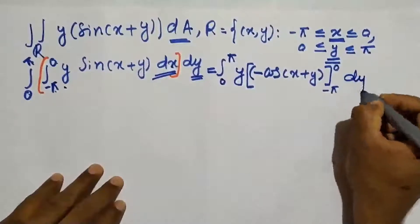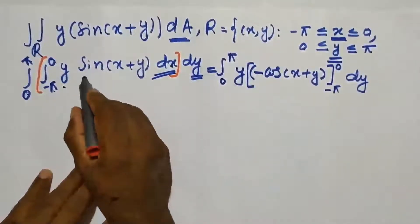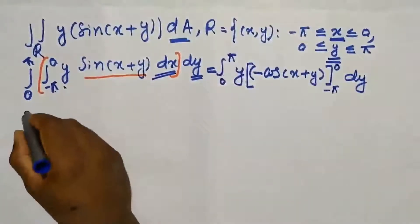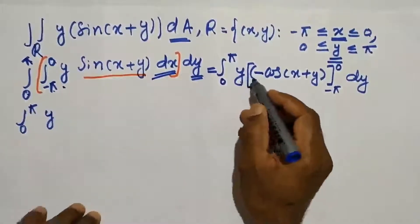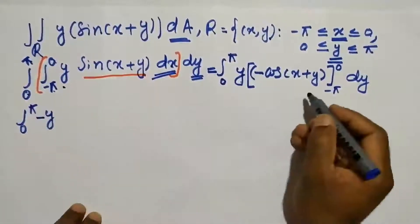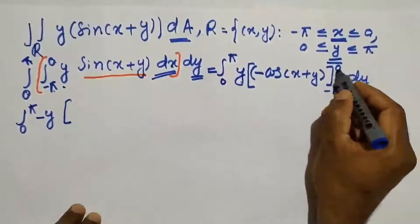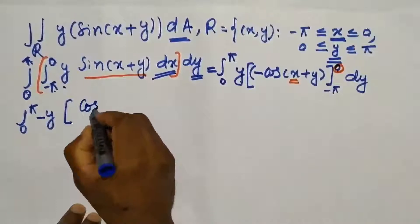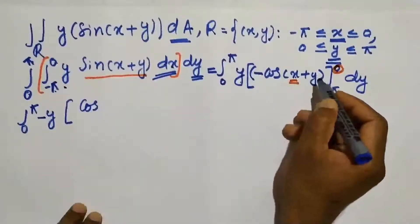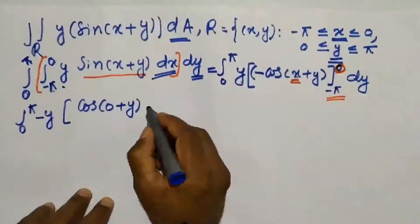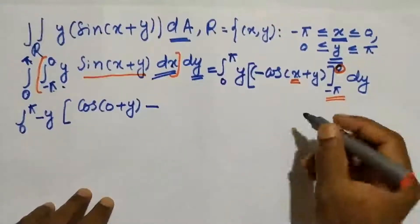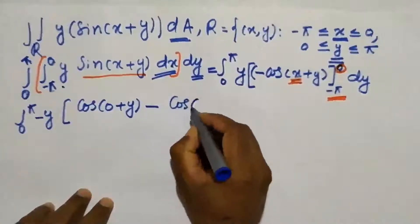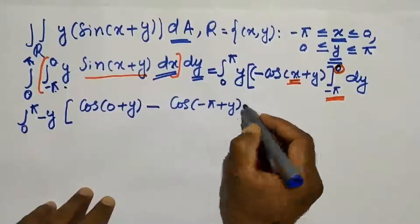We can also integrate sin(x+y) using the trigonometric formula: sin(x+y) = sin(x)cos(y) + cos(x)sin(y). On applying the upper limit 0 to cos(x+y), we get cos(0+y). Before applying the lower limit, put a negative sign, and on applying the lower limit minus pi to cos(x+y), we get cos(minus pi + y) dy.